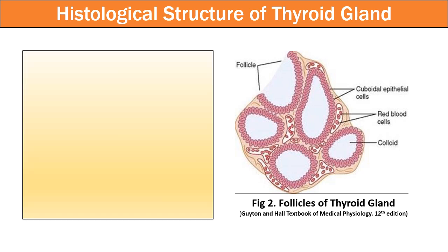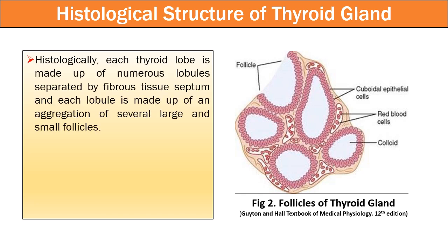Coming to the histological structure of the thyroid gland, each thyroid lobe is made up of numerous lobules separated by fibrous tissue septum, and each lobule is made up of an aggregation of several large and small follicles.